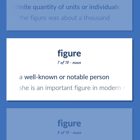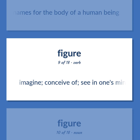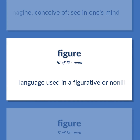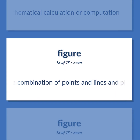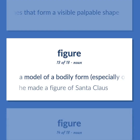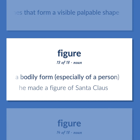A well-known or notable person. Example: She is an important figure in modern music. Alternative names for the body of a human being. Imagine; conceive of; see in one's mind. Language used in a figurative or non-literal sense. Make a mathematical calculation. A combination of points and lines and planes that form a visible, palpable shape. A model of a bodily form, especially of a person. Example: He made a figure of Santa Claus.